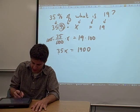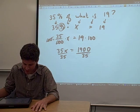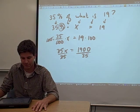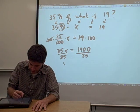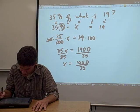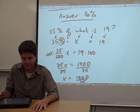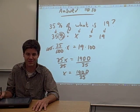Now 35 is multiplying x, so to get rid of it, we have to divide. If we divide the left-hand side by 35, we also have to divide the right-hand side by 35. When the 35s cancel, we get 1900 over 35 equals x. And that is our answer. 35% of 1900 over 35 equals 19.